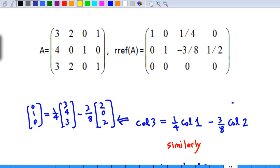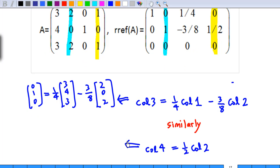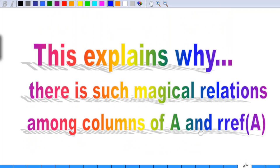Similarly, in the row reduced form of A, we observe that column 4 is half of column 2. So, we also expect in the columns of A, the column 4, 1 0 1 is also half of column 2. This explains why there is such magical relation among columns of A and RREF of A.